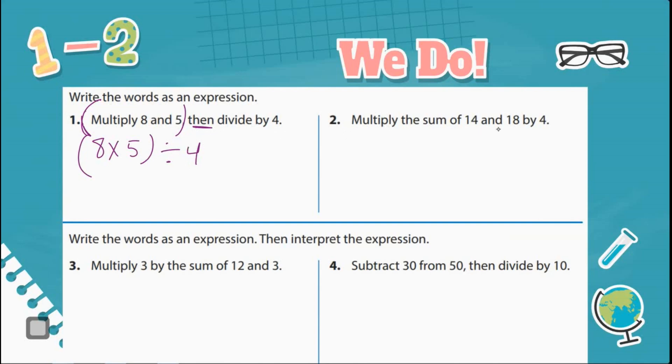Number 2. Multiply the sum of 14 and 18 by 4. So it's saying multiply the sum. What does it mean to have the sum of something? Sum? That means to add. So it says multiply the sum of 14 and 18. So 14 plus 18. Multiply by 4. I need to get the sum first and then I'm going to multiply it by 4.